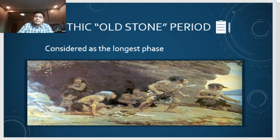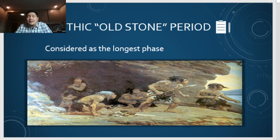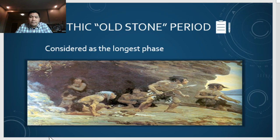Let's start with the Paleolithic period, also called the Old Stone period, considered as the longest phase. Under the Stone Age it is the longest age system compared to Bronze and Iron because of the trial and error method. The Stone Age was further divided into three, and the first division is the Paleolithic — all errors were tested during this period, which is why it's the longest phase.